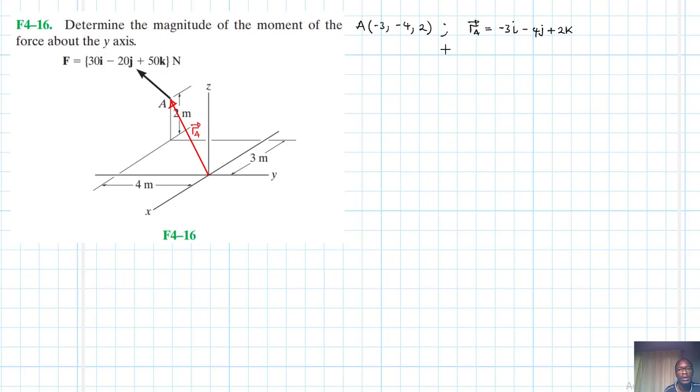And then we have the force vector: 13i minus 20j plus 50k.